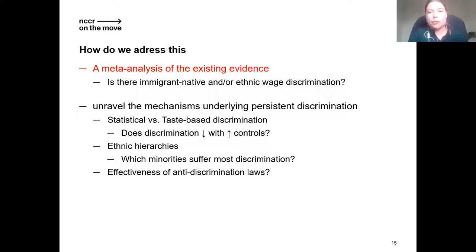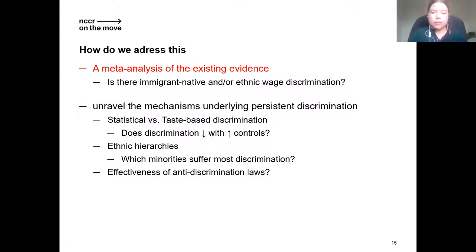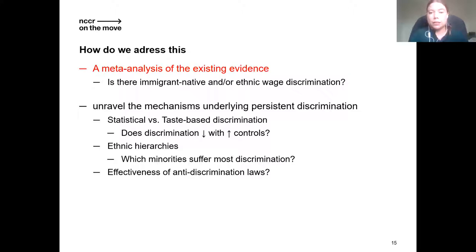We can get an idea of whether it is statistical discrimination or taste-based discrimination, whether there are ethnic hierarchies — is it just being an immigrant, or are some ethnicities discriminated against more than others? We can also look at the effectiveness of anti-discrimination legislation. We have a large dataset of estimates from many countries over a long time period. Most European countries only implemented anti-discrimination legislation in 2001, so if this legislation is effective, we should see that in our data.